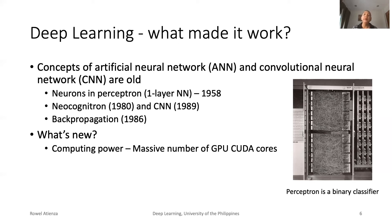The computations are in the form of a massive number of tensor multiplications and additions. Tensor is a generalization of vectors and matrices. CPUs are not simply built for this task. However, there is a class of processors used in gaming called graphics processing units, or GPUs, that are built for such kinds of computations. Graphics rendering in video games requires a lot of tensor multiplication and addition — exactly what is needed in deep neural networks.